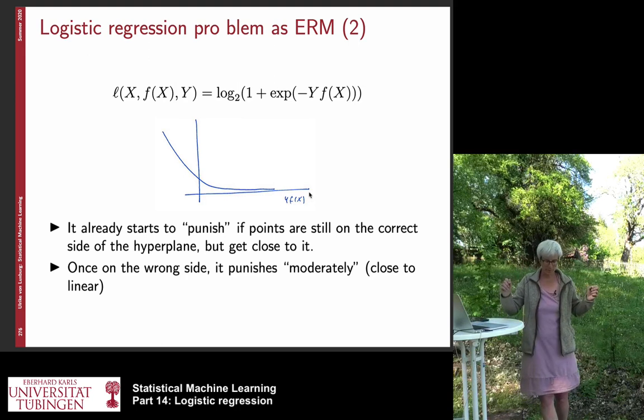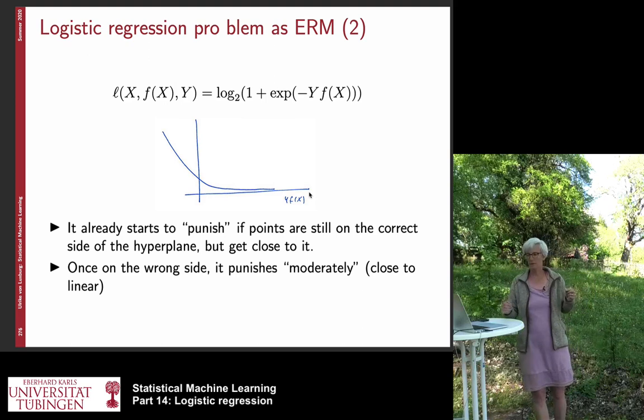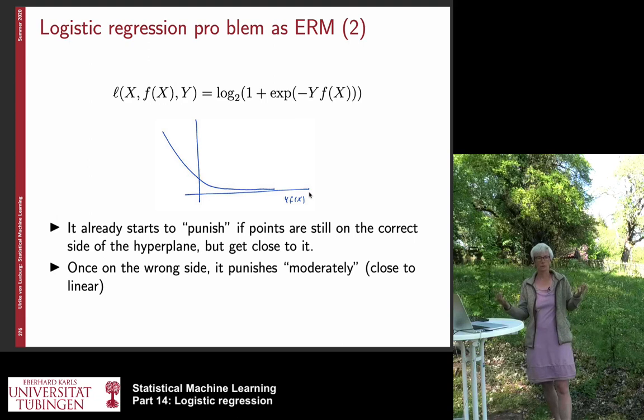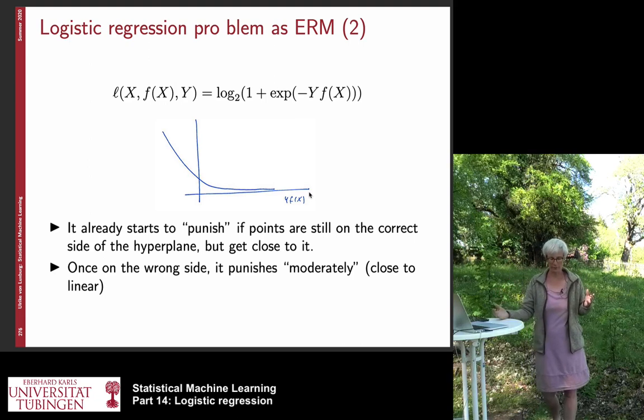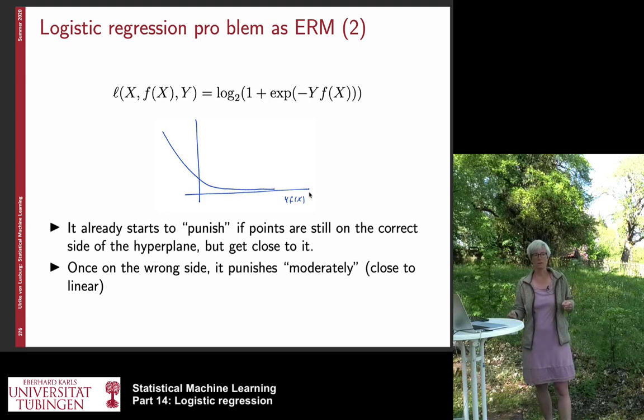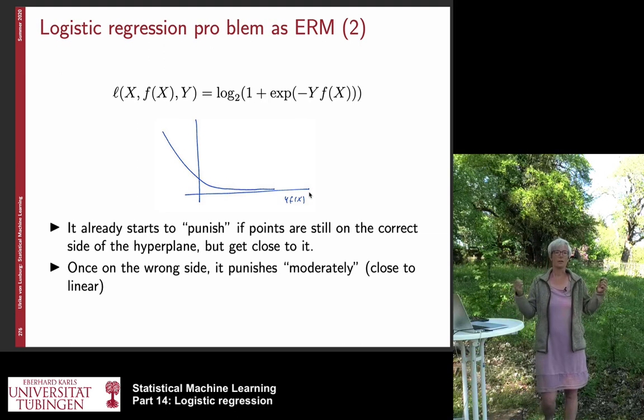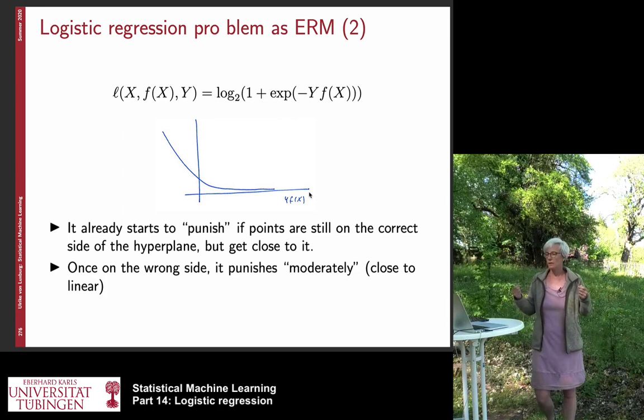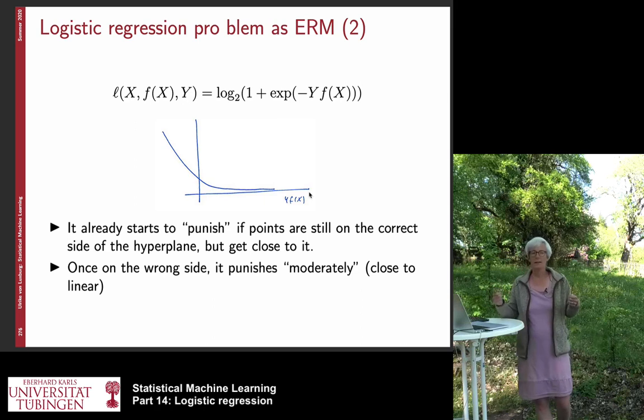And if you think about it, if you have a correct classification, f(x) is the function that you use to produce your suggested classification result. And in the end, we are going to look at the sign of this function. If the function is positive, we say it's class plus one. If the function is negative, we say it's class minus one. And if you now look at the product between y and f(x), it turns out that if this product is positive, then our classification was correct.